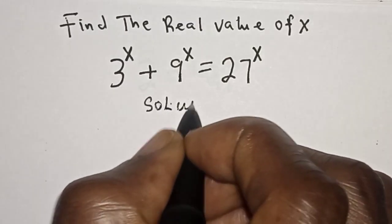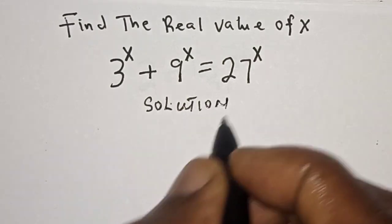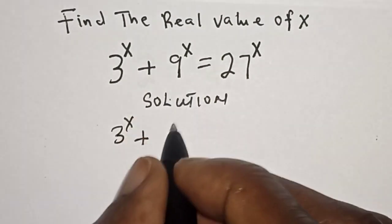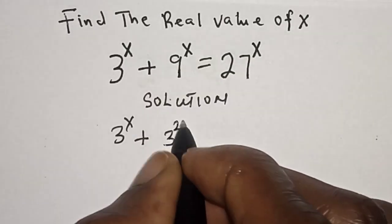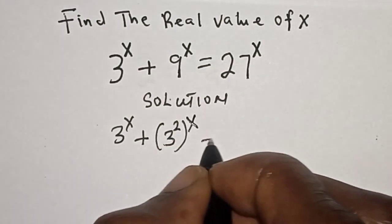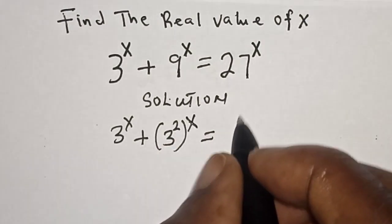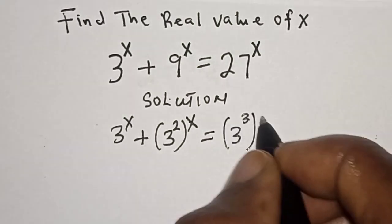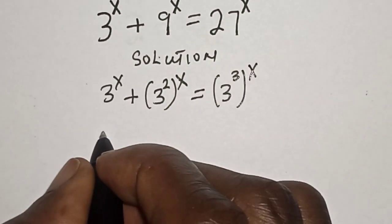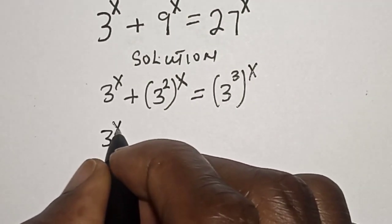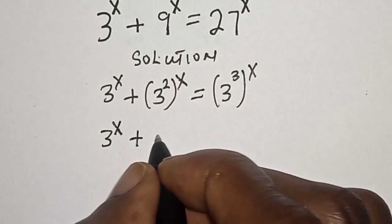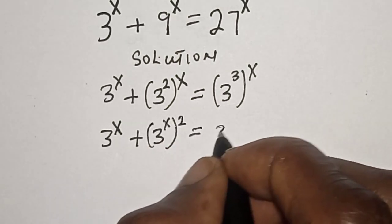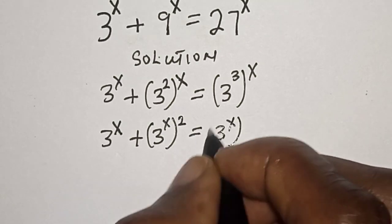Solution. 3 raised to power s plus 9 raised to power s can be written as 3 squared raised to power s, which is equal to 27 raised to power s, written as 3 raised to power x. Then this is T raised to power s plus T raised to power s squared is equal to T raised to power s raised to power 3.